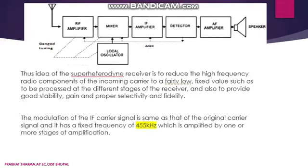The idea behind the superheterodyne receiver is to reduce the high-frequency radio component of the incoming carrier to a fairly low fixed frequency — that is, 455 kHz — so that the further blocks can be operated at this fixed frequency, which is then amplified through one or more stages of amplification.